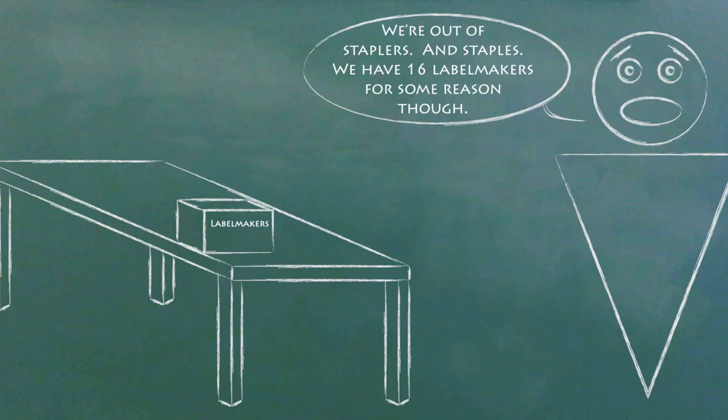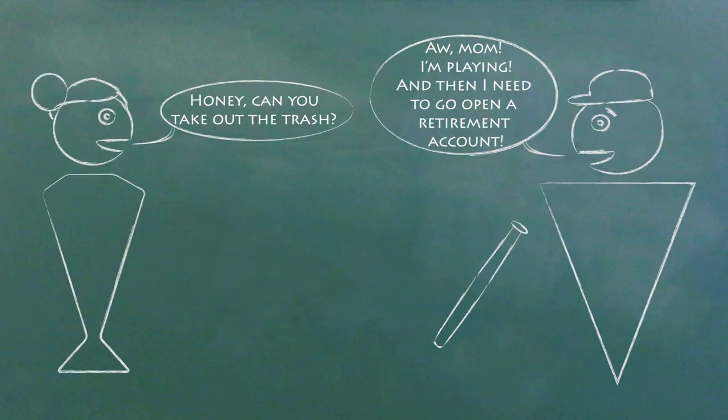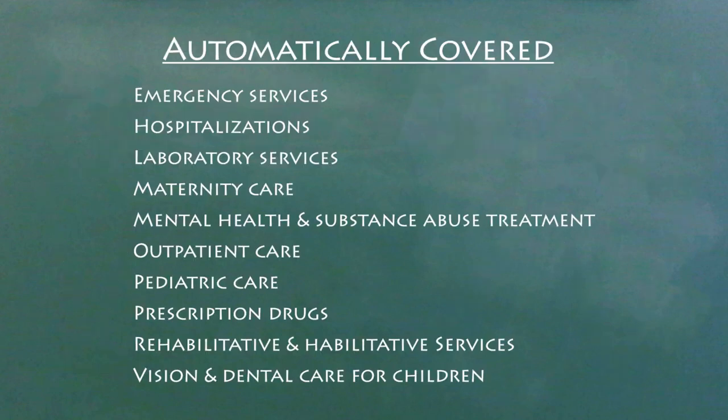Fourth, insurance companies have to spend 80% of their budgets on health care or internal improvements instead of on things like salaries or administrative costs. If not, they have to issue rebates. Parents can keep their kids on the insurance until those kids are 26, whether or not they live at home, and certain conditions or illnesses will be required to be covered by everyone's insurance.